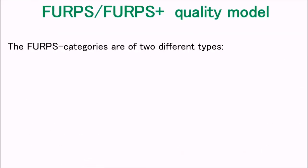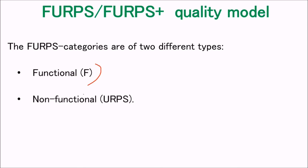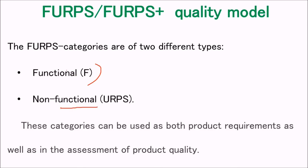The FURPS categories are of two types: F (functionality) is functional, while U, R, P, S (usability, reliability, performance, supportability) are non-functional. These categories can be used as both product requirements and for the assessment of product quality.